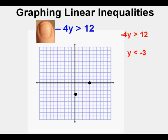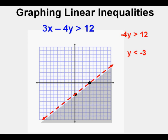For inequalities, there are two kinds of boundary lines: a solid line representing equal to, and a dashed line when the boundary line is not part of the solution set. Since this one is less than, it's a dashed line. We draw a dashed line using these two points. And since the sign is less than, which means down or below, we shade below the boundary line. This is the graph of 3x minus 4y is greater than 12.